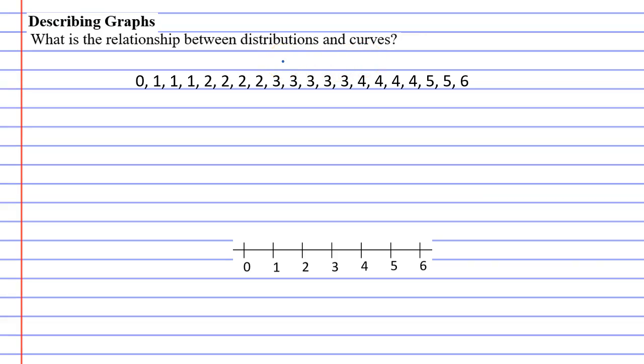We'll talk first about what a distribution is. A distribution is basically where data has been organized. And a really good distribution that I like is what's called a dot plot.